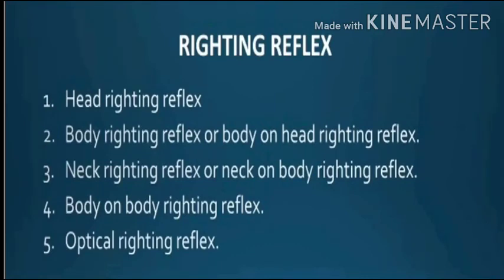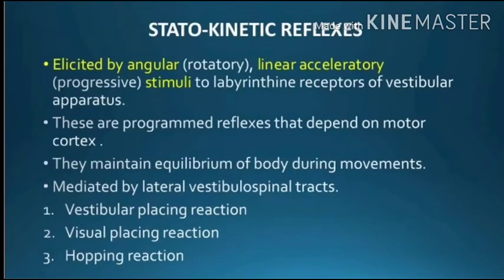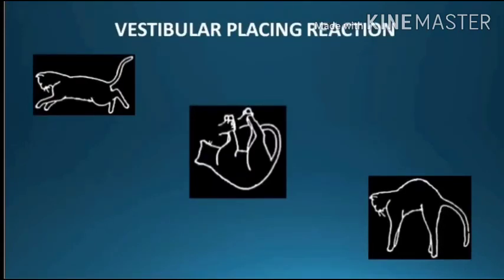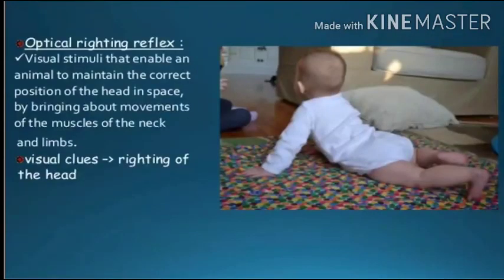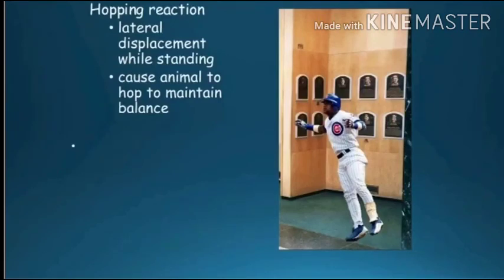Statokinetic reflexes are the vestibular placing reaction, visual placing reaction, and the hopping reaction. Vestibular placing reaction: stimulus is linear acceleration; response is the foot placed on a supporting surface in position to support the body; integrating center is the cerebral cortex. Visual placing reaction: stimulus is visual cues; response is foot placed on supporting surface; receptors are the eyes; integrating center is the cerebral cortex. Hopping reaction: stimulus is lateral displacement while standing; response is hops to maintain the limb in position to support the body; receptors are muscle spindles; integrating center is the cerebral cortex.